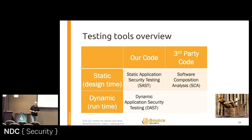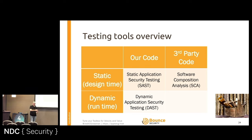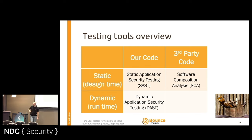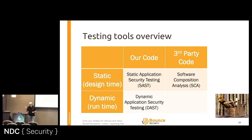SCA, or Software Composition Analysis, also scans what's on disk, but this time it's looking at third-party code — the libraries and dependencies we're using. And finally, DAST, or Dynamic Application Security Testing, runs at runtime while the code is running dynamically — it's scanning the running application. Those are the three types of tools I'll refer to throughout the talk. Some tips are specific to one tool, some to a couple, and some are relevant to all three.